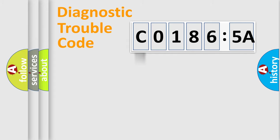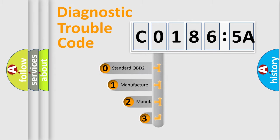Powertrain, Body, Chassis, and Network. This distribution is defined in the first character code.